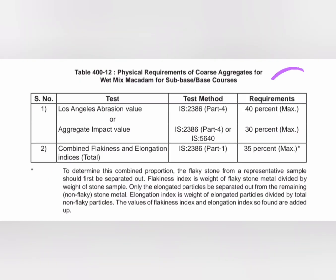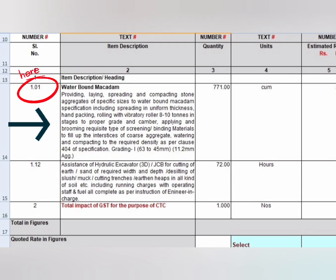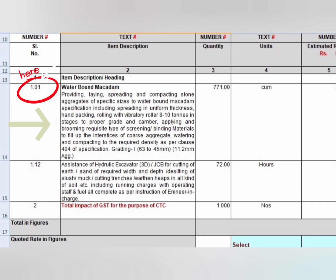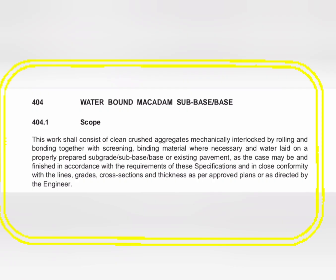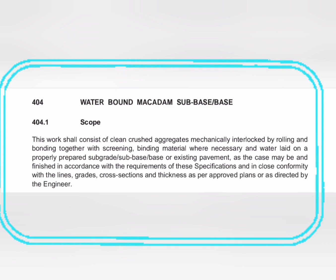Tables 412 and 413 are referenced in the BOQ. The BOQ description for Water Bond Macadam reads: providing, laying, spreading and compacting stone aggregate of specific sizes to WBM specification, including spreading in uniform thickness, hand packing, rolling with vibratory roller 8 to 10 tons in stages to proper grade and camber, applying and brooming requisite type of screening and binding material, compacting to required density as per Clause 404 of specification, Grading 1.